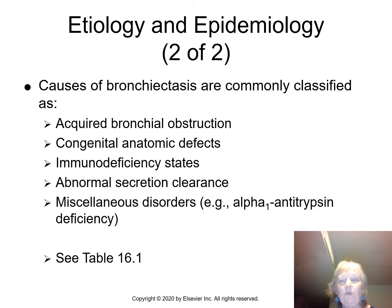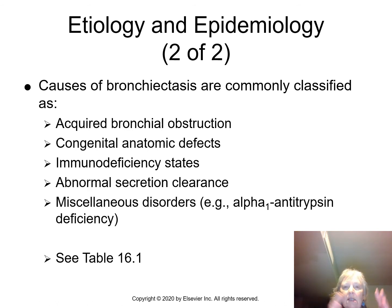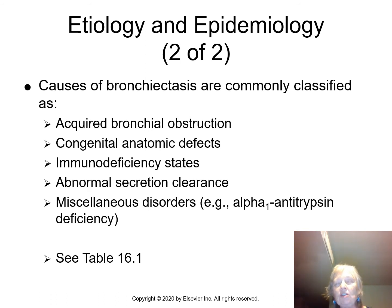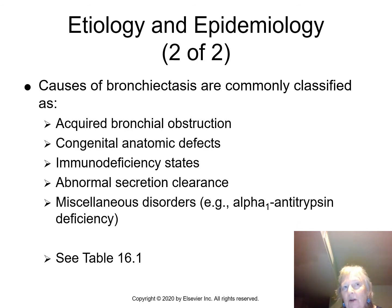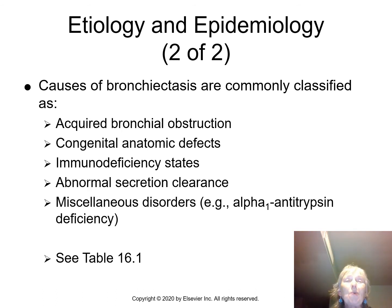Causes are commonly classified as acquired, congenital, immunodeficiency, abnormal secretion, and notably alpha-1 antitrypsin deficiency, which is also a cause of emphysema. This illustrates that obstructive diseases are not separate conditions along a continuum — there is overlap between them. When evaluating a patient with bronchiectasis, you need to look at what other conditions may coexist.